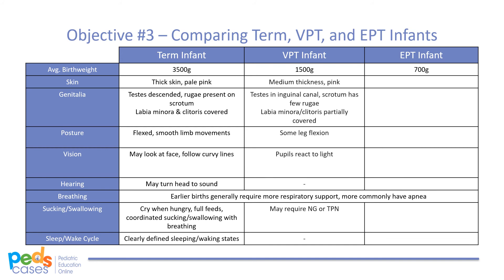Very preterm infants may have medium thickness skin. In males, their testes are typically not descended, and in females, the labia minora and clitoris are only partially covered. VPT infants may have some leg flexion and vision and hearing is somewhat limited. These infants may require respiratory support or have apnea and may require nasogastric feeding or TPN.